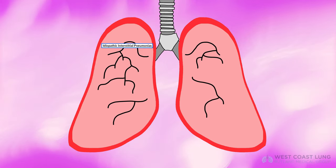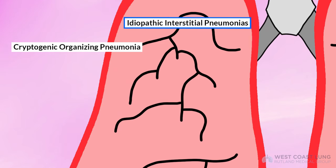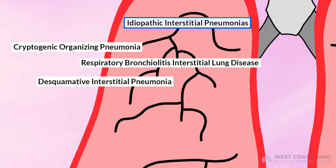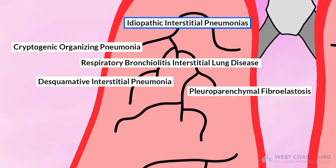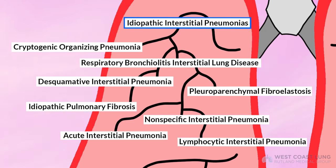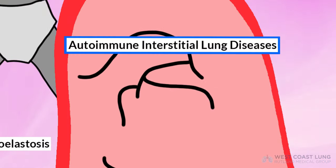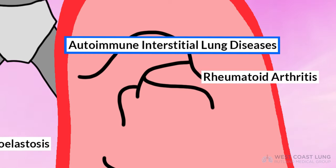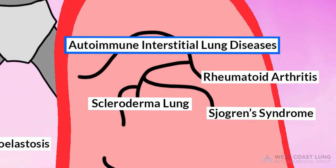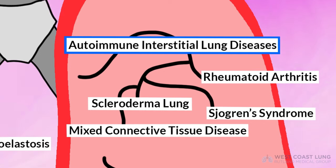I tend to break ILD into several categories. One category is called idiopathic interstitial pneumonias — there are about eight of them: cryptogenic organizing pneumonia, respiratory bronchiolitis interstitial lung disease, desquamative interstitial pneumonia, pleuroparenchymal fibroelastosis, idiopathic pulmonary fibrosis, nonspecific interstitial pneumonia, acute interstitial pneumonia, and lymphocytic interstitial pneumonia. For autoimmune lung diseases, we're talking about rheumatoid arthritis-associated ILD, scleroderma lung, ILD associated with Sjögren's syndrome, and ILD associated with mixed connective tissue disease.